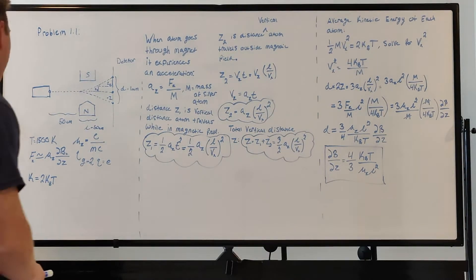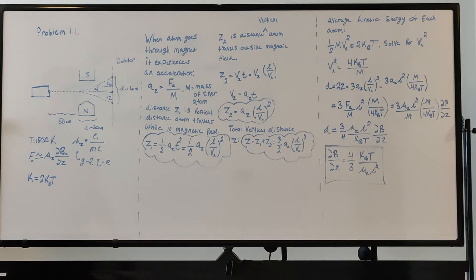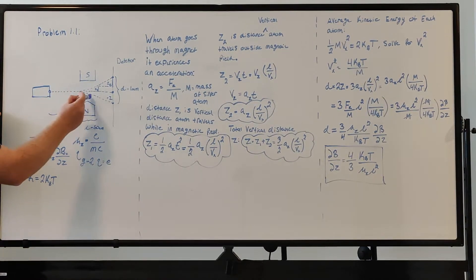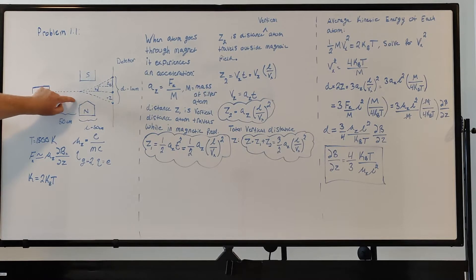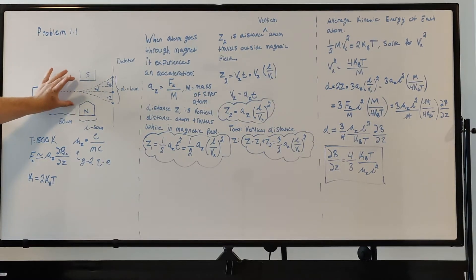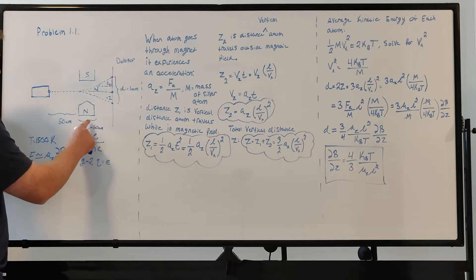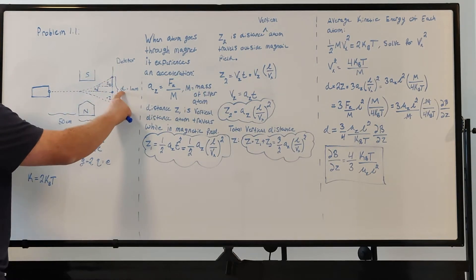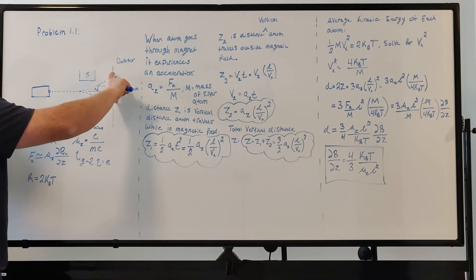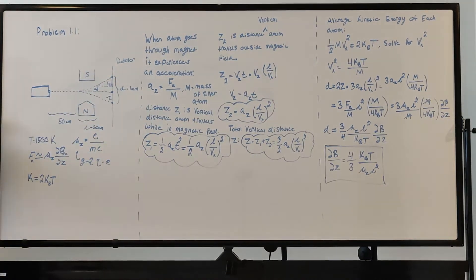I'm going to put the textbook down and go over this diagram. We have an oven that emits silver atoms. The Stern-Gerlach device has the north pole down and south pole up, so the magnetic field is stronger at the north pole and gradually decreases toward the south pole — that rate of change of the magnetic field is what we're trying to find. The length of the magnet is 50 centimeters, denoted L. The separation between the two points the atoms hit is D, which is 1 millimeter — exaggerated here for demonstration.